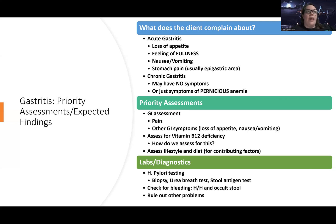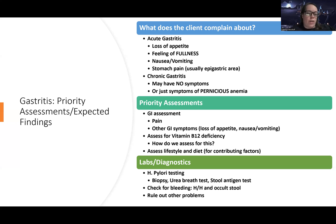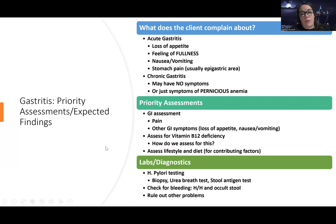We also want to check for bleeding, looking for complications. Normally with gastritis there's inflammation and irritation but not bleeding. If it is bleeding, we start worrying about complications like GI bleed and hemodynamic instability — where blood pressure and other vitals are not stable. So we check H&H and a fecal occult stool test. We also want to rule out other GI problems, and they may end up needing an upper scope.